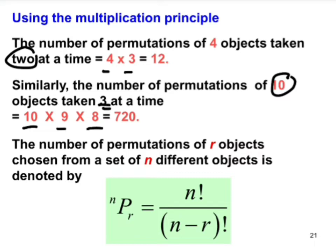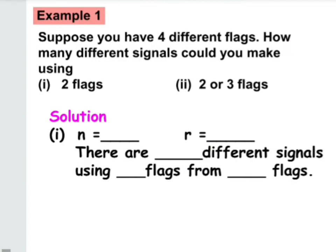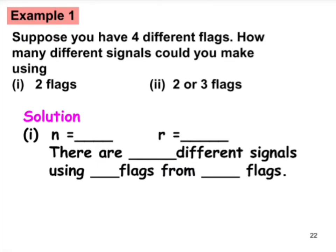We have a formula: the number of permutations of r objects chosen from n different objects is nPr, which equals n factorial over (n minus r) factorial.